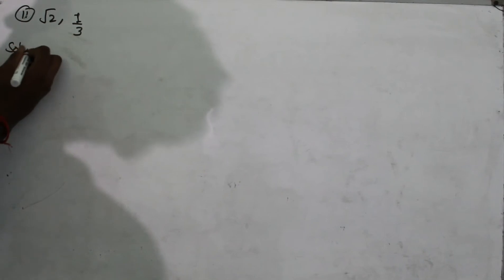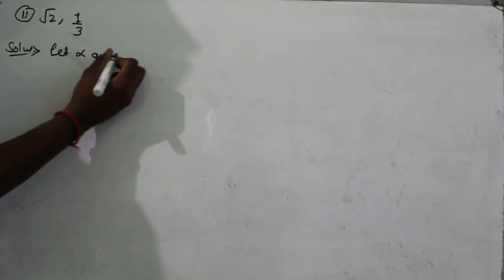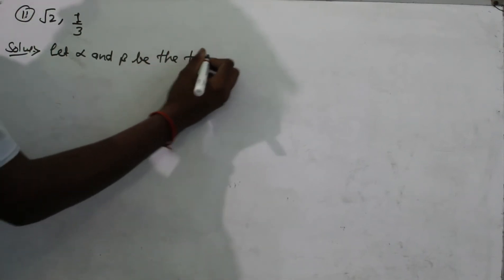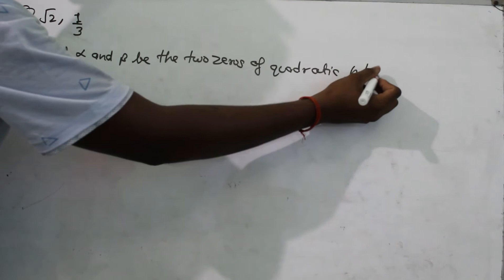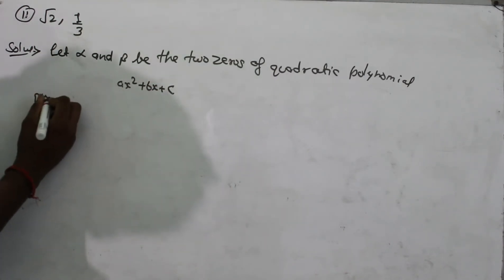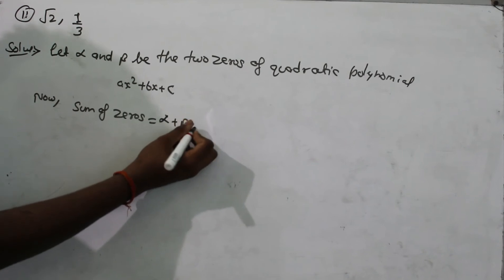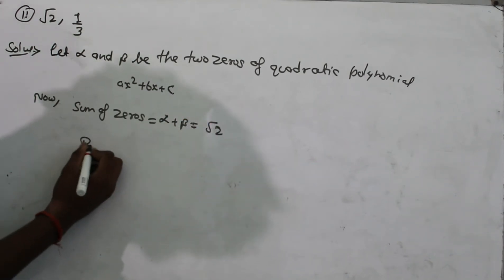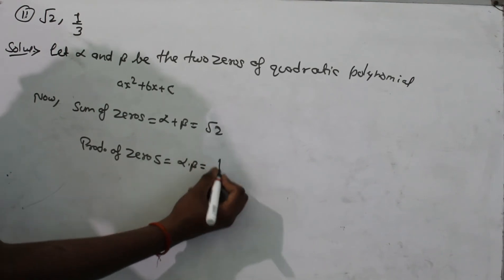The second question gives sum of zeros equal to √2 and product of zeros equal to 1/3. We follow the same approach. Let alpha and beta be the two zeros of ax² + bx + c. Sum of zeros: alpha plus beta equals √2. Product of zeros: alpha times beta equals 1/3.